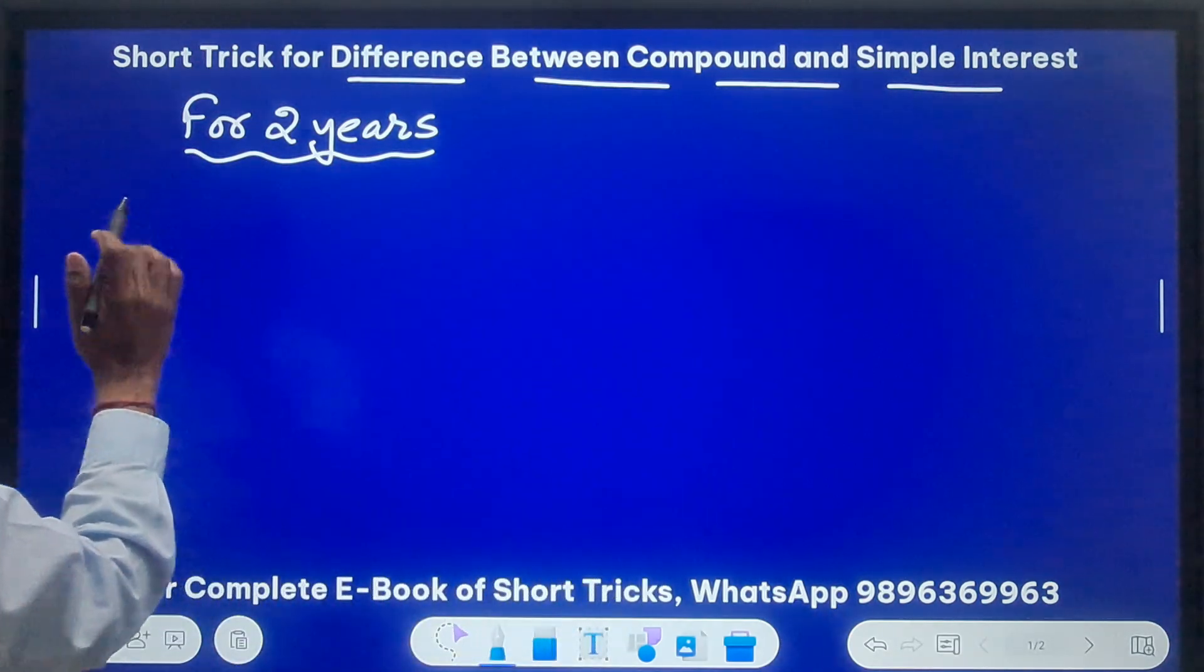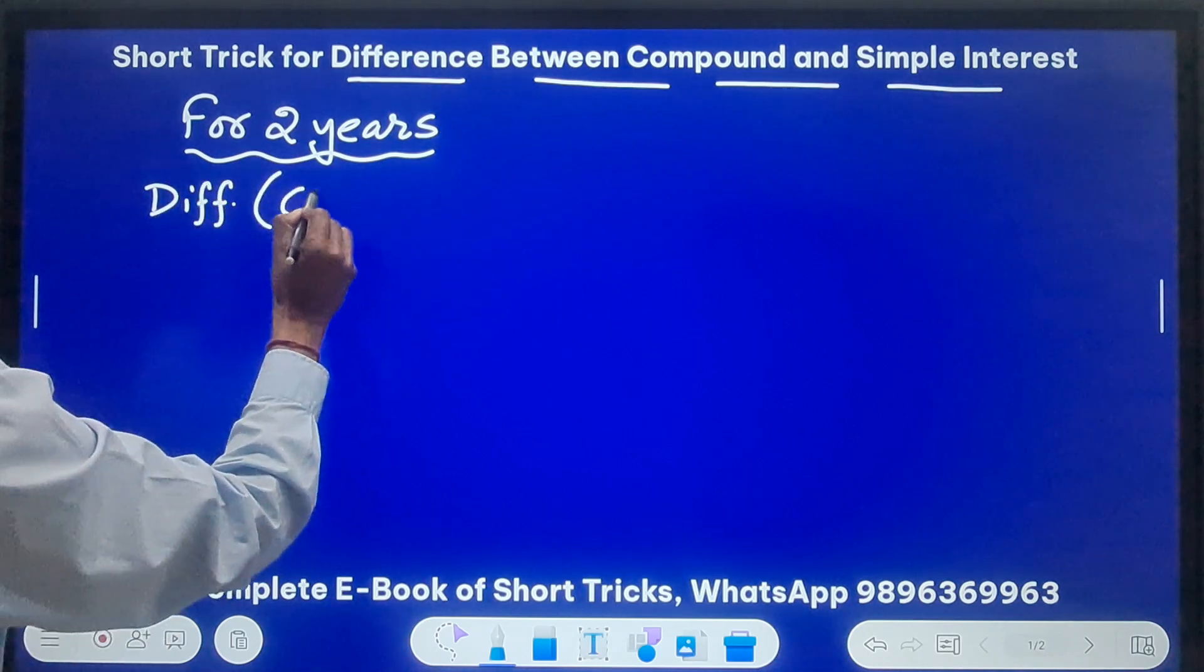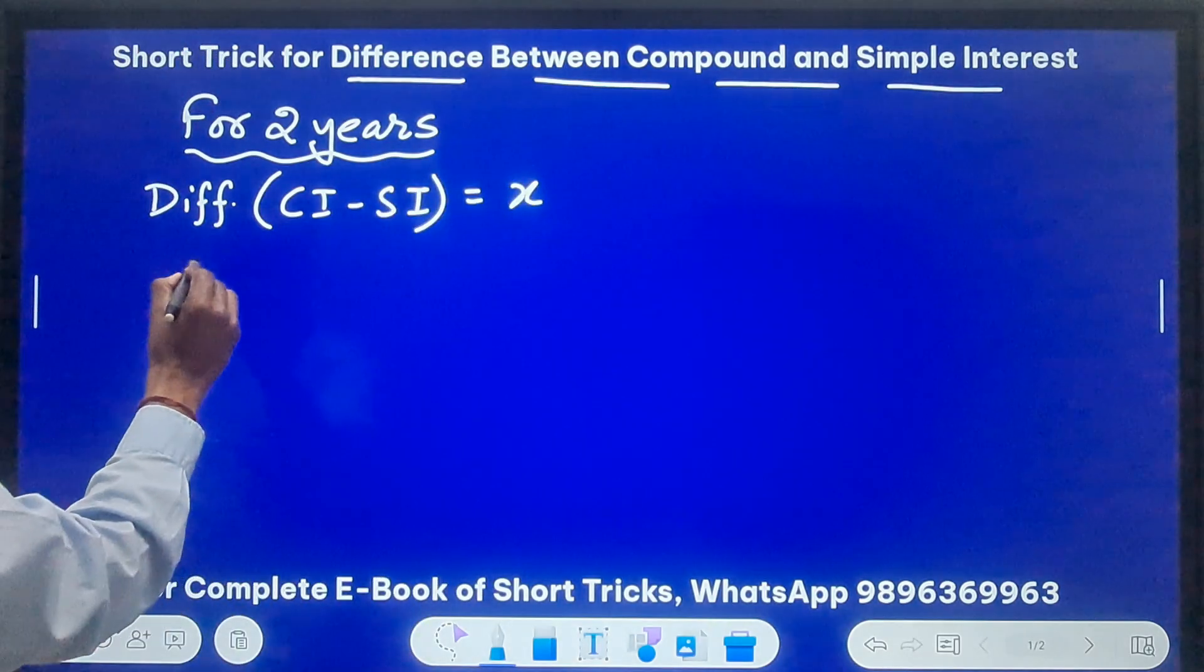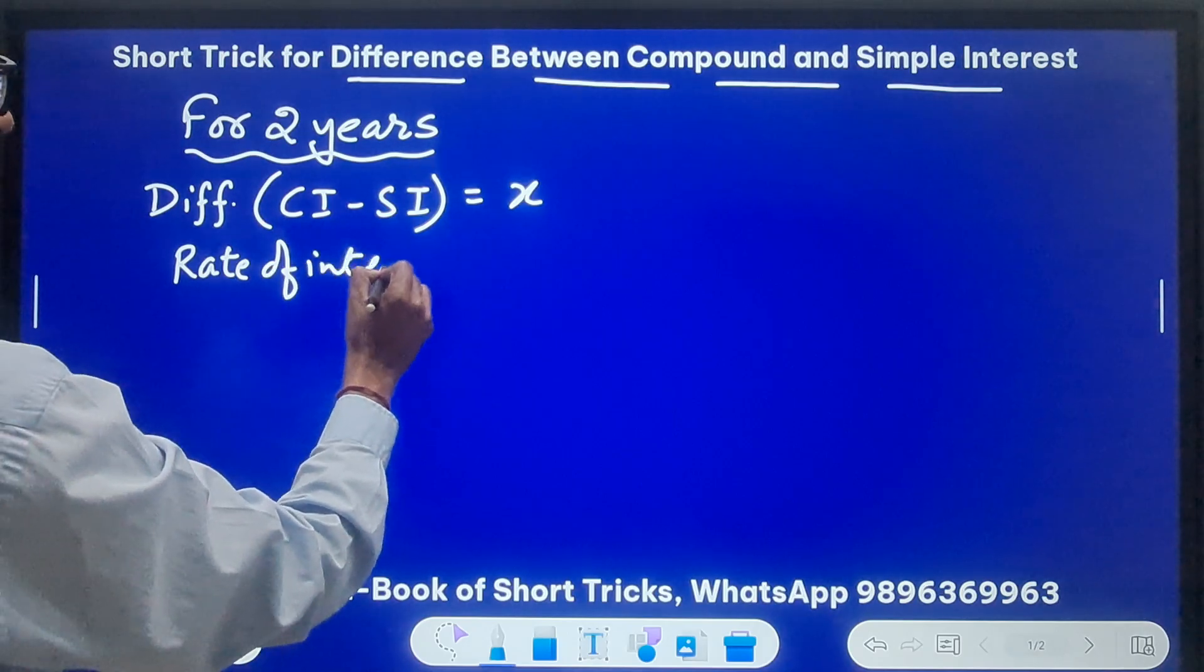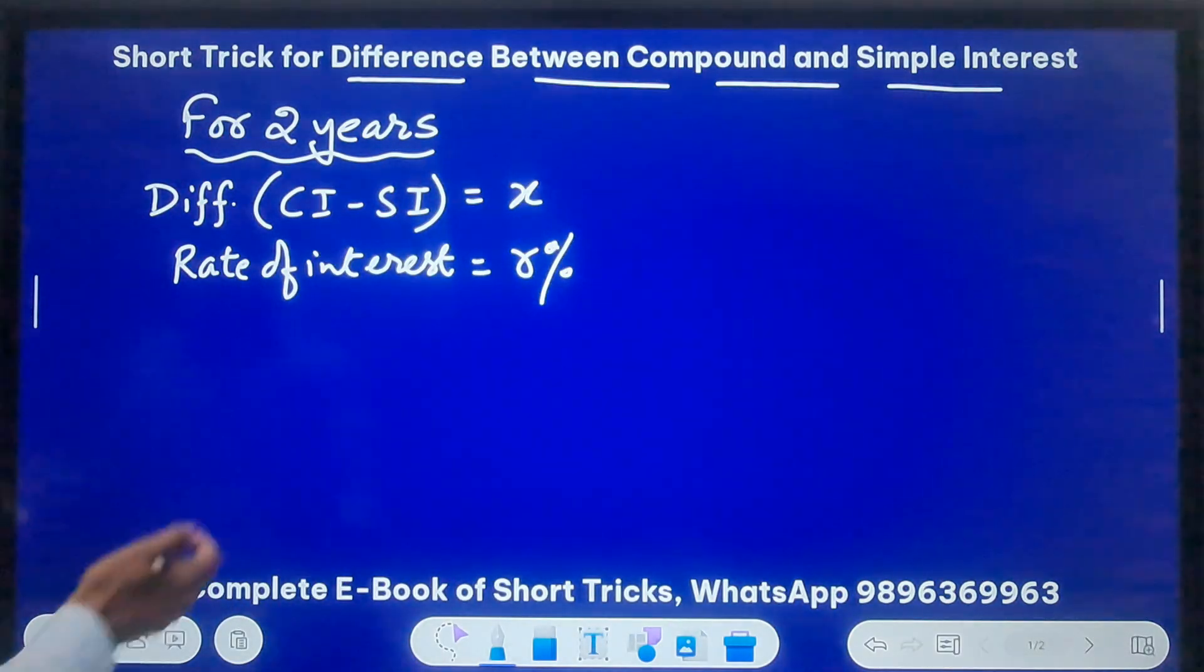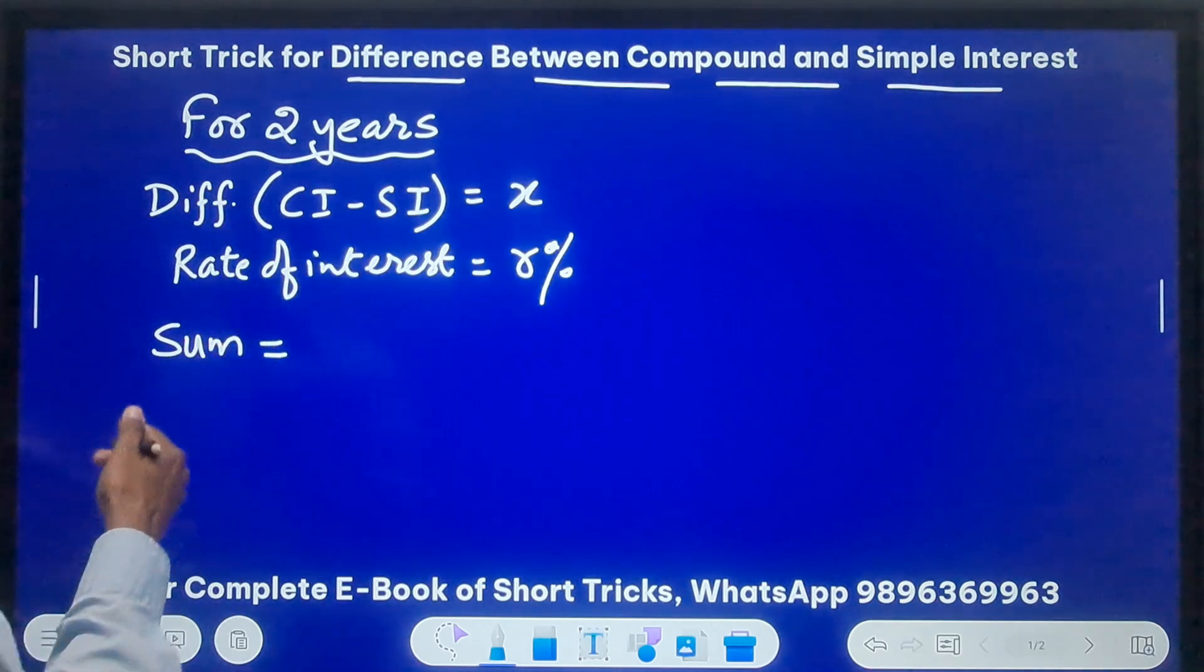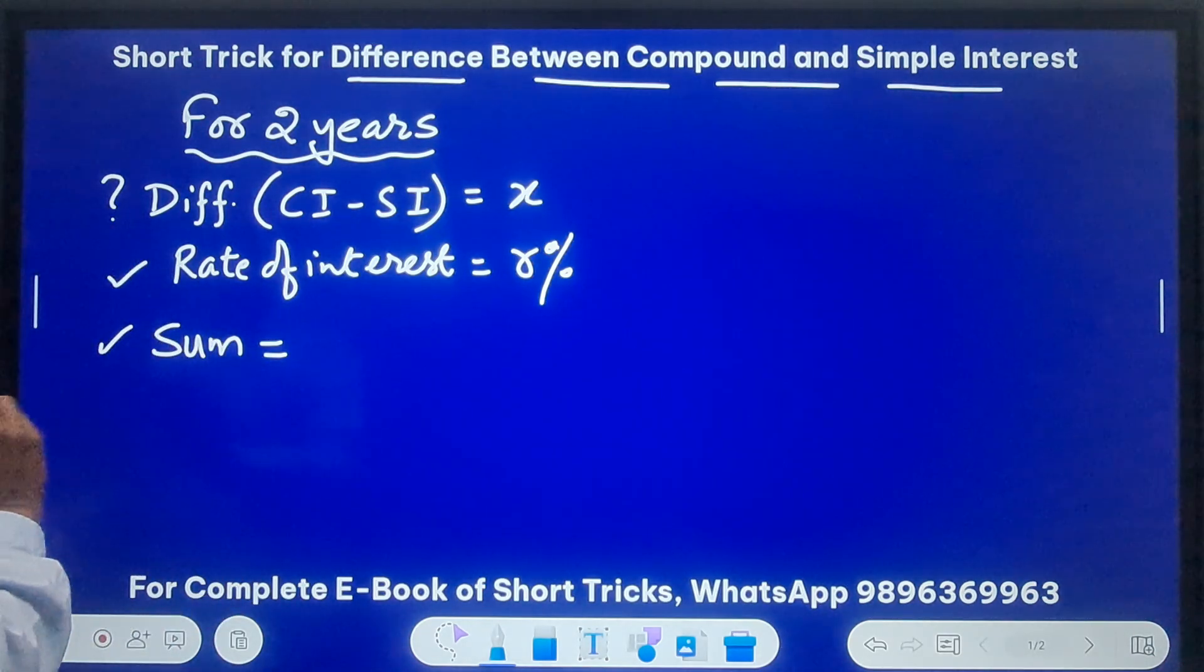Now suppose you assume that the difference between the CI and SI - so the difference is CI minus SI because the compound interest is always greater than simple interest - suppose you assume that this is X. And you assume that the ROI, that is the rate of interest, is say R percent, R percent that is per annum, and we want to calculate the sum, that means the principal amount.